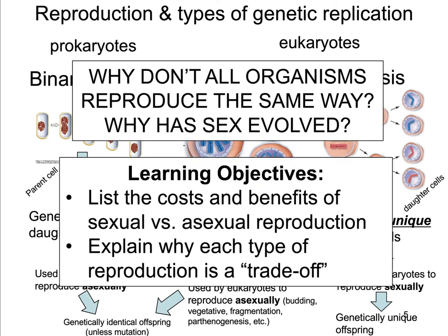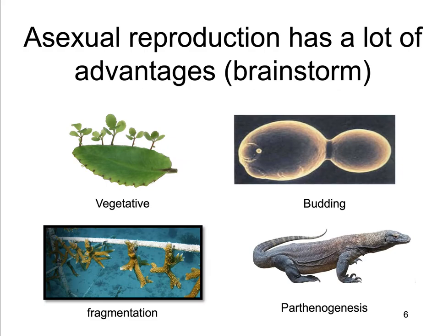So why don't all organisms reproduce the same way? Why go through all the trouble to have meiosis, sexual reproduction, and fertilization? Why not have everything reproduce asexually? The next couple of slides are about listing the costs and benefits of sexual versus asexual reproduction. We're going to talk about the advantages of each and the idea that each type of reproduction involves evolutionary trade-offs. Think about what advantages an organism might have reproducing asexually — budding, vegetative reproduction, fragmentation, parthenogenesis. Go ahead and write those down.